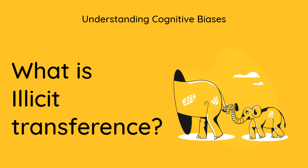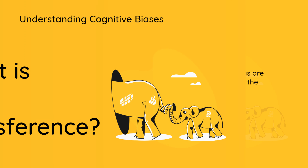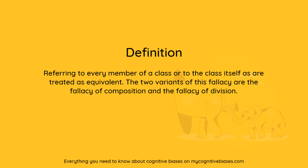What is illicit transference? Definition: referring to every member of a class or to the class itself as are treated as equivalent. The two variants of this fallacy are the fallacy of composition and the fallacy of division.